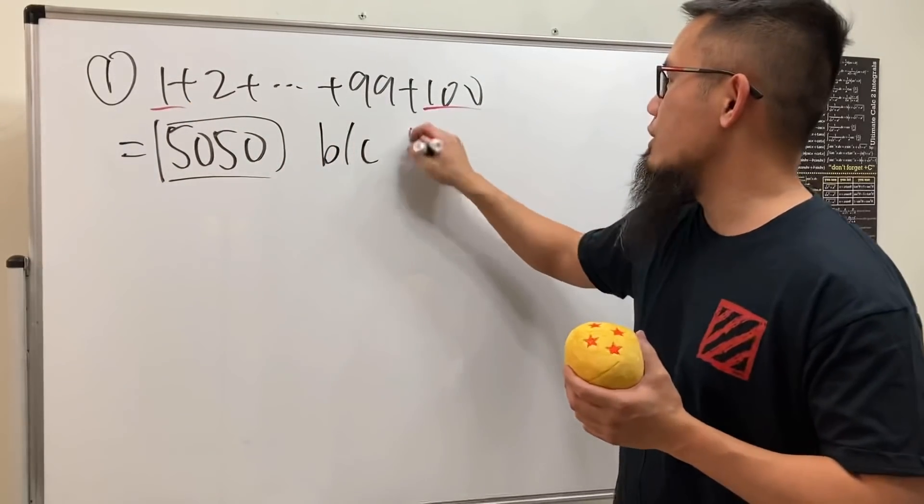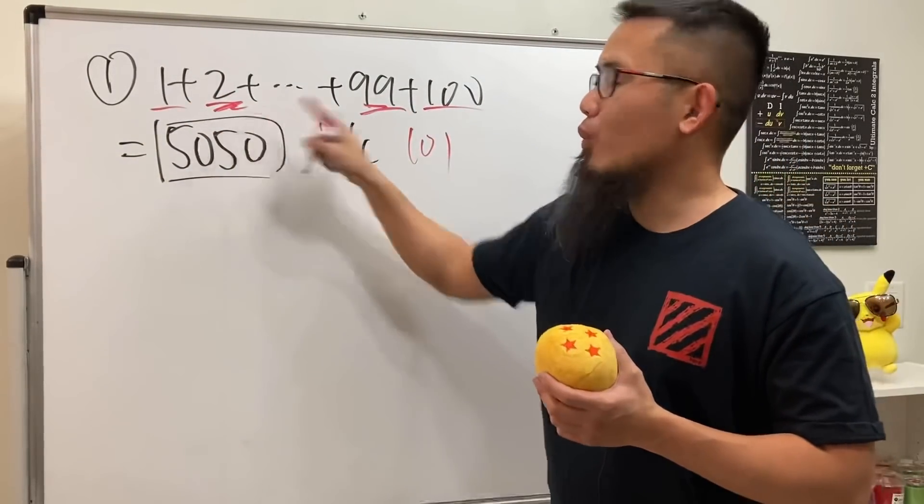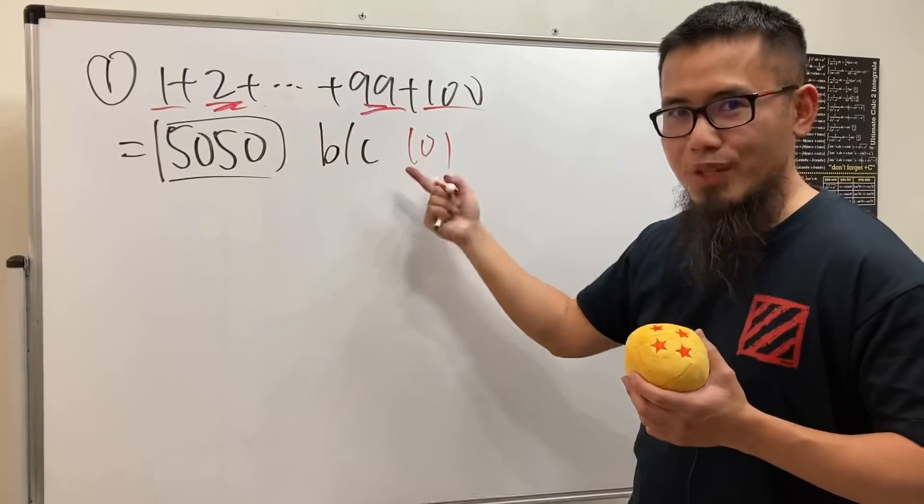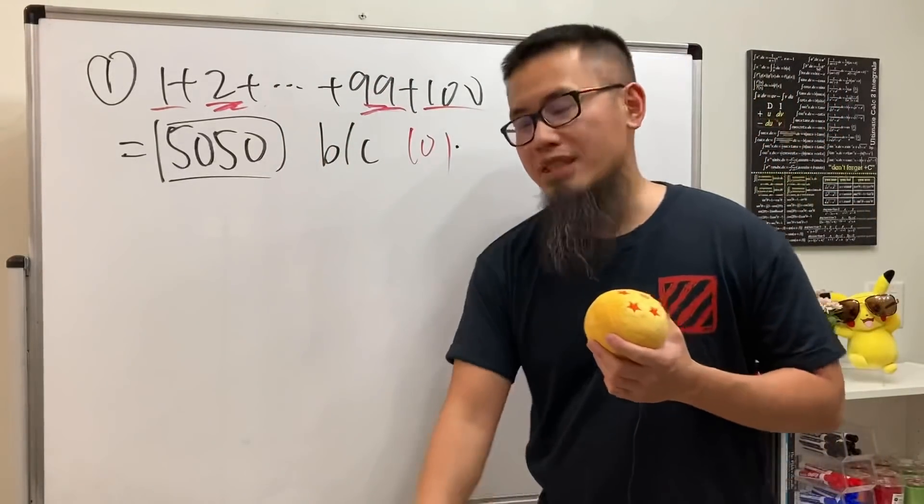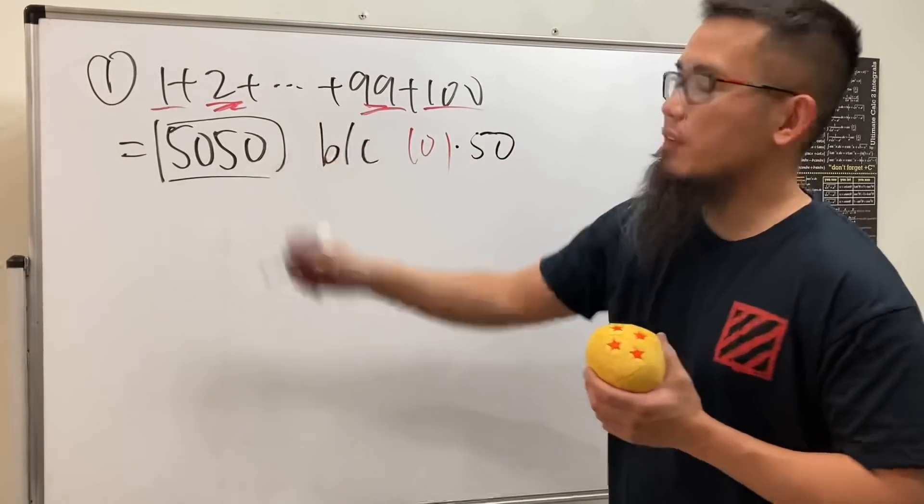Well, take a look why. Because we see that 1 plus 100 is 101, 2 plus 99 is 101, 3 plus 98 is still 101, and so on, so on, so on. How many 101s would you have? Yes, 50 of them. That's why it's 50-50.